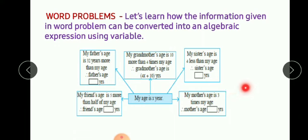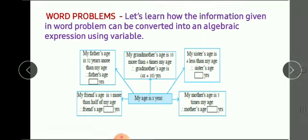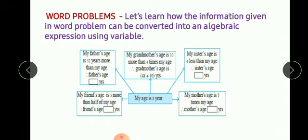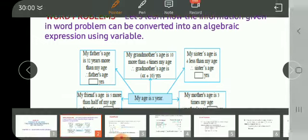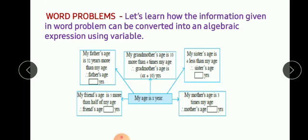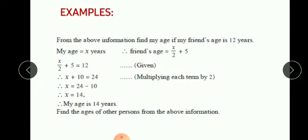My mother's age is 3 times my age. 3 times means 3 into x, and your age is x, so your mother's age will be 3x. So in this box you will write 3x. Summary: first box x plus 32, sister's age x minus 4, friend's age x upon 2 plus 5, and mother's age 3x. Clear?